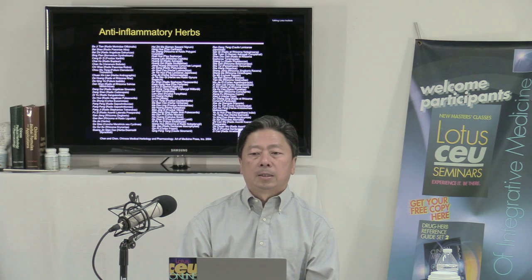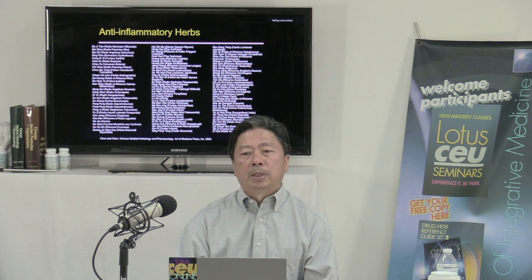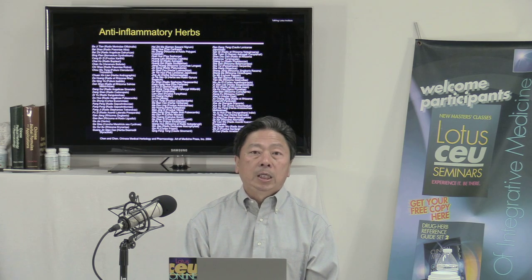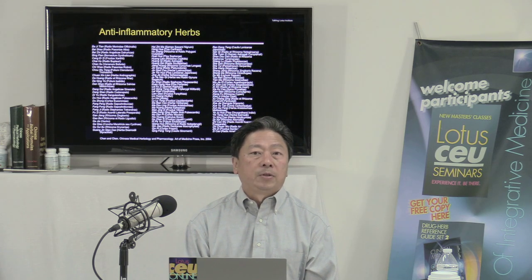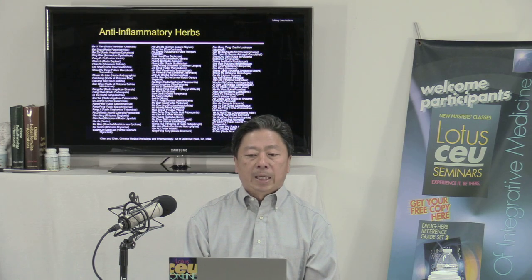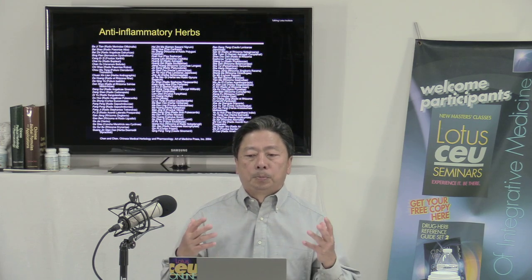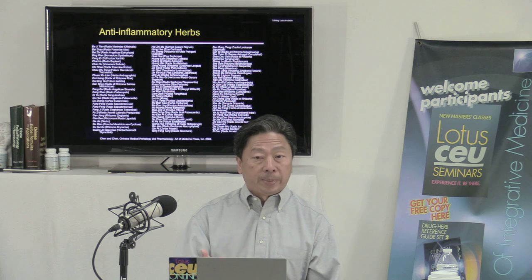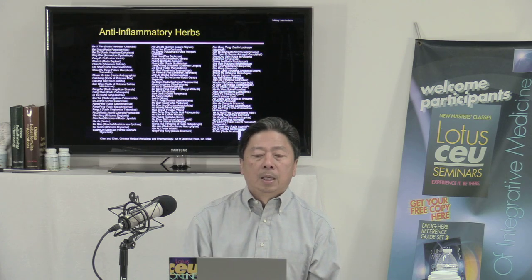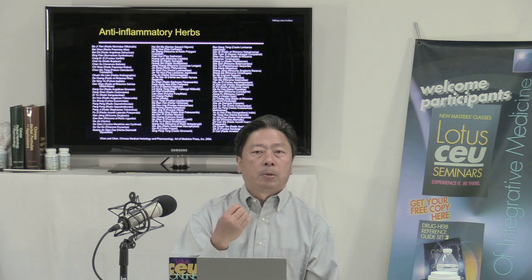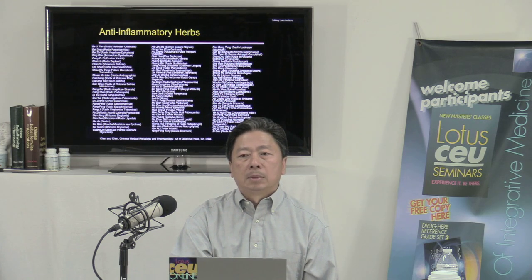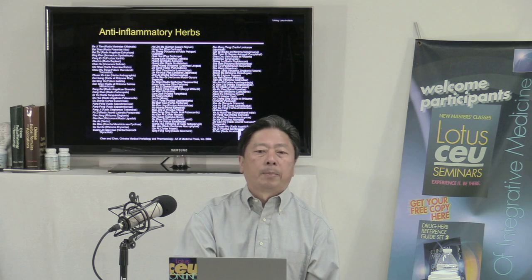Acute inflammation tends to be more heat and fire oriented; chronic inflammation is also heat but tends to be more deficiency heat. The idea is to bring both together — knowing what the herb is from a TCM perspective and what they treat. Ideally if you also know the pharmacological effect, that helps you zero in and select a more specific herb based on the disease and the pharmacology of the herbs.